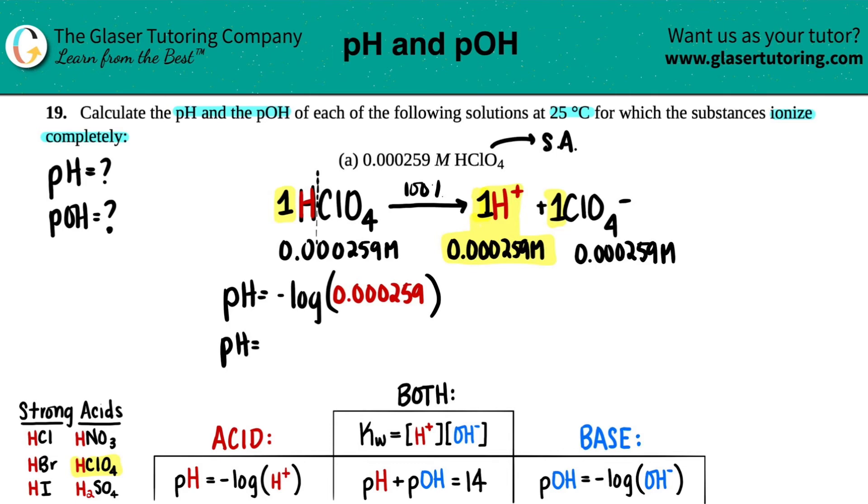So negative log of 0.000259. And I get 3.487. Now,